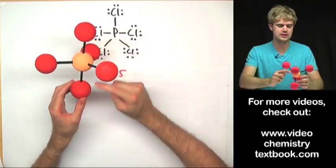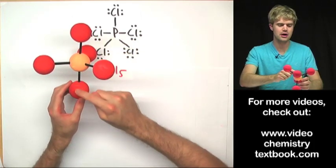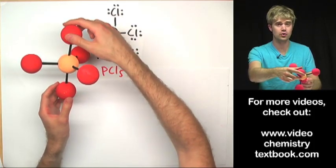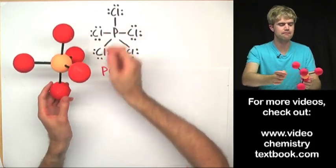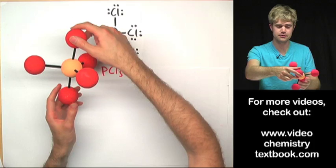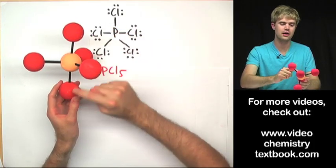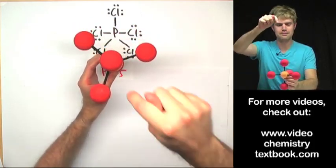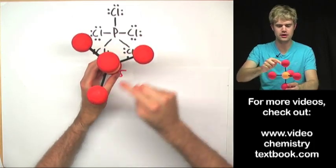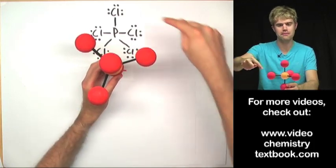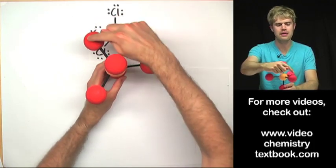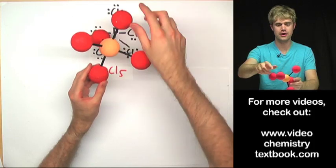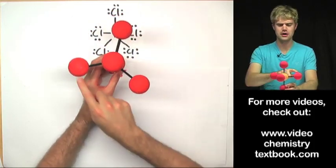There are two things to notice about this kind of molecule. First, these three atoms make a line: the central atom, which would be the phosphorus, and then two chlorines. These two atoms on the top and bottom of the molecule are called the axial atoms — they make a line with the central atom, three in a row. If we twist this to get a top-down view, we see three atoms connected around the middle of the molecule. We call these the equatorial atoms, and they make a triangle shape.